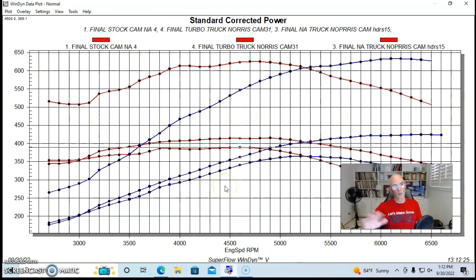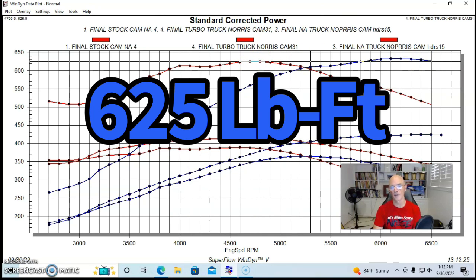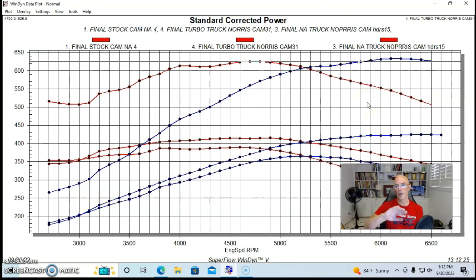You can see we're now making way over 600 horsepower, 630 something horsepower. Yeah, 633 horsepower, similar amounts of torque, 625 foot pounds, because we know that the power curve now kind of mirrors what happens with the NA curve.